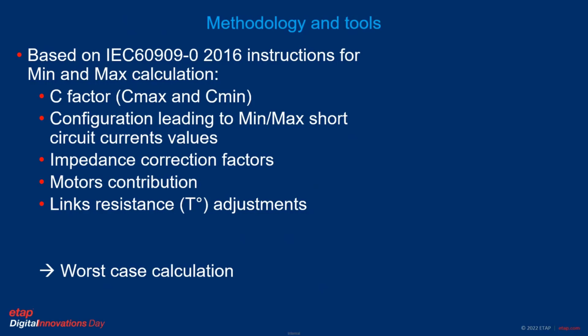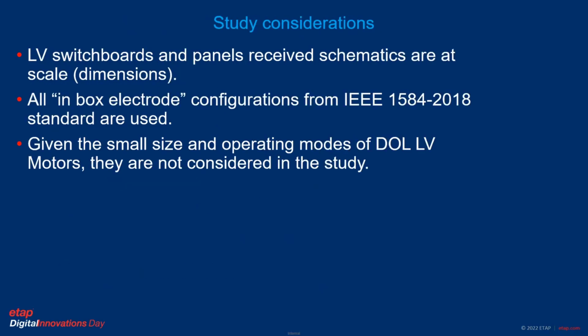By computing this, we are able — thanks to ETAP — to retain only one single calculation, which will be the worst case calculation. As additional considerations, we based ourselves on the drawings and on the dimensions of each equipment: switchboards, switchgear, panel boards. We also based ourselves on the electrode configurations from the last version of IEEE 1584. Depending on the approach and the evaluation of the engineer, different electrode configurations can be considered. In this particular case, small motors have been disregarded in the study given their small size.